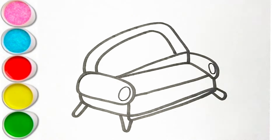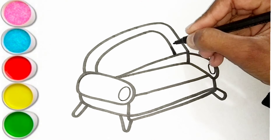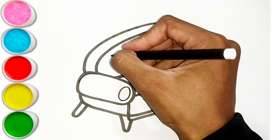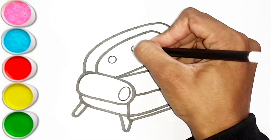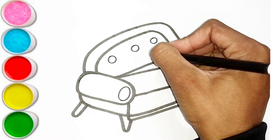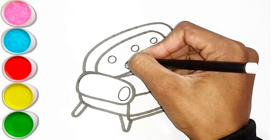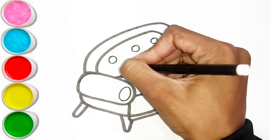Q is for Queen, Q-Q-Queen. R is for Rabbit, R-R-Rabbit. S is for Sun, S-S-Sun. T is for Toad, T-T-Toad.